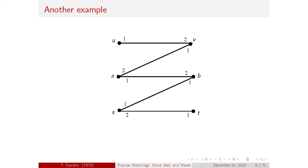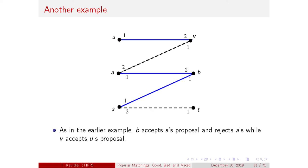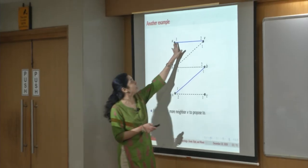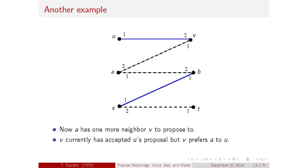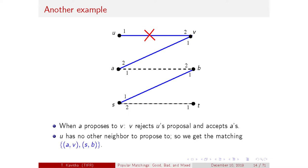Here is an example with three men and three women. The initial proposals have all men propose to their top choice neighbors. B prefers S to A, so she accepts S's proposal and rejects A. Now A proposes to V, who has temporarily accepted U's proposal but prefers A to U. So when A proposes to V, she rejects U and accepts A's proposal. We end up with the blue matching.